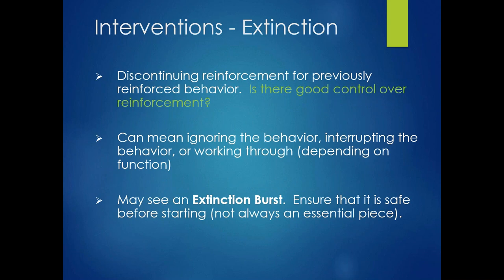Other interventions might involve extinction, which would include discontinuing reinforcement for what was previously reinforced in terms of behavior. We need to understand that we have good control over the reinforcement if we're going to go that direction. It can mean ignoring the behavior if the child is seeking attention. It might mean interrupting the behavior, or it could mean working through the behavior if the function is to escape a task. We may see an extinction burst, which is not something we would take lightly. We want to make sure it would be safe to use an extinction approach before we start, because it may not always be an essential piece to the plan.